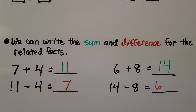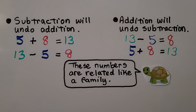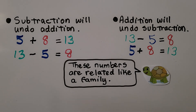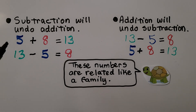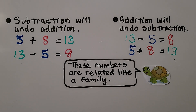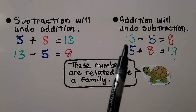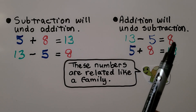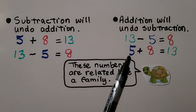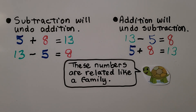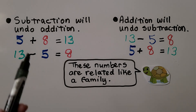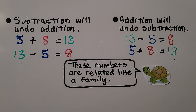Related facts use the same numbers. Subtraction will undo addition. Here we have an addition fact: 5 plus 8 is equal to 13. We can undo this — the opposite — giving us 13 minus 5 is equal to 8. And addition will undo subtraction. Here we have 13 minus 5 equals 8; we can do the opposite: 5 plus 8 equals 13. So these numbers are related like a family — the same three numbers used for these related facts.